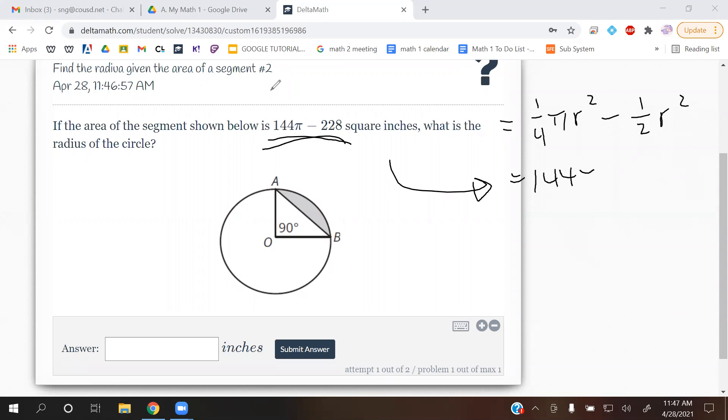So 144π minus 228. So the part that's being subtracted, this thing, they're equal to each other. So let me rewrite just that part. We have 1/2r² is equal to 228.